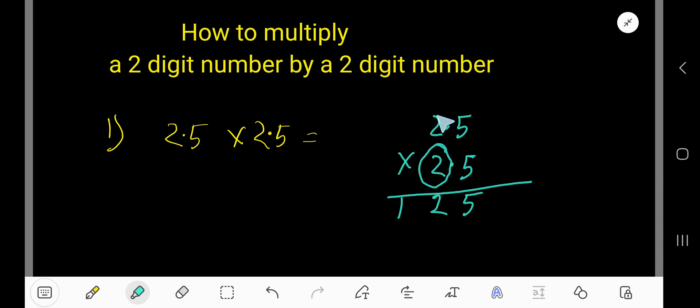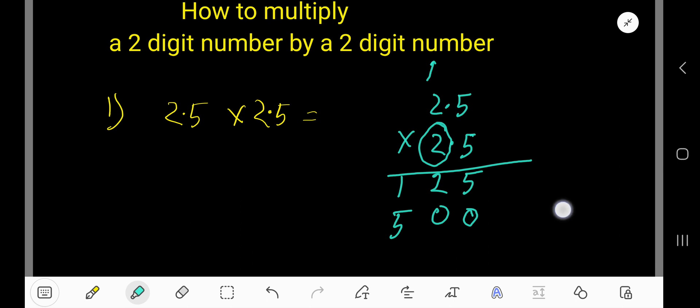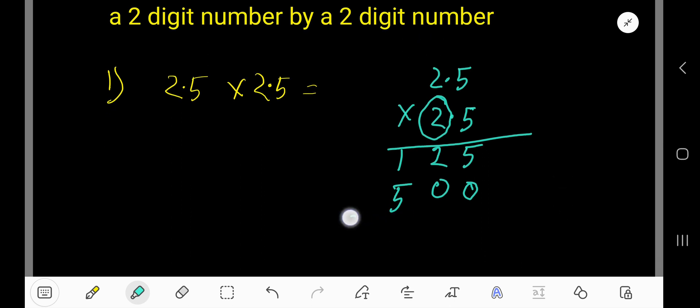Now start with this 2. But this 5 is in the first column, this 2 is in the second column, so the product will come to the second column. The first column will have a placeholder 0. 2 times 5 is 10, so write 0 here and carry 1 to the next column. 2 times 2 is 4, plus 1 is 5. Now add: 5 plus 0 is 5, 2 plus 0 is 2, 1 plus 5 is 6.